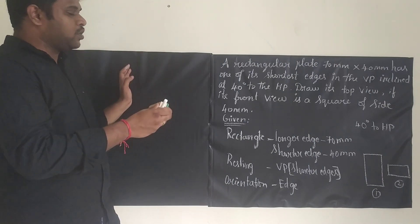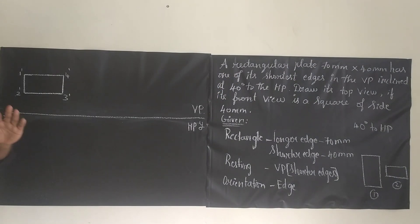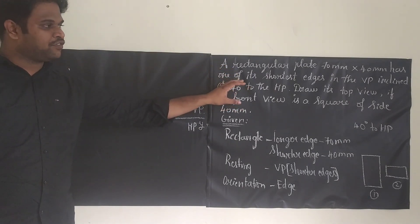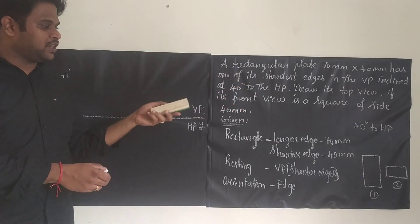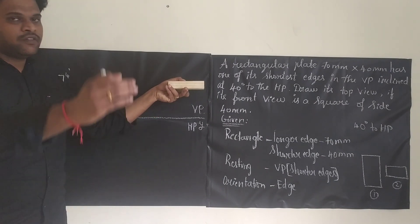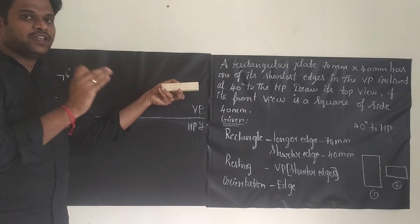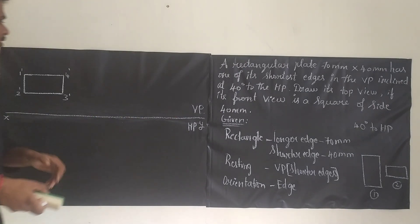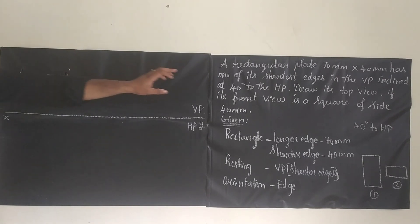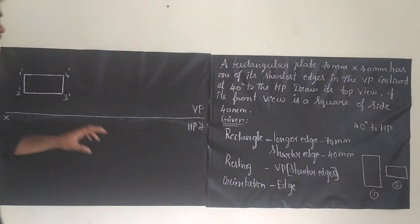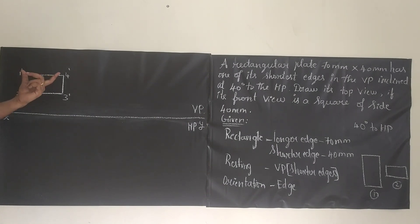So the same thing we are going to draw. The first step is to draw the front view, because the rectangle will be seen only from the VP. When the rectangle is lying on VP and you are seeing from the front view, you can see the true shape. The base diagram will be a rectangle. Since they have given the short edge, we take the second diagram — the short edge length is 40mm and the long edge length is 70mm.